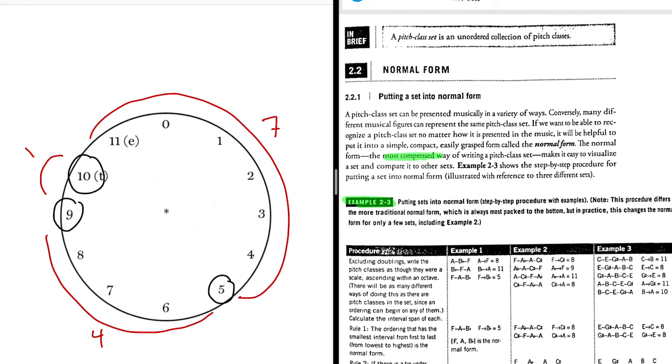So because seven is the biggest interval, we do not want to have that in our set. Nope. So the smallest form is going to span from five to ten. Once you know that the smallest form is from five to ten, that's your normal form. Write the numbers down clockwise, in clockwise order, and put them in square brackets. Five, nine, ten.